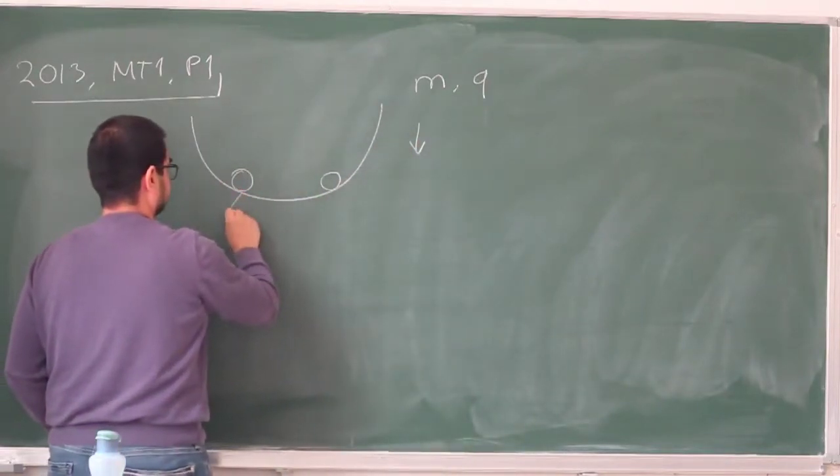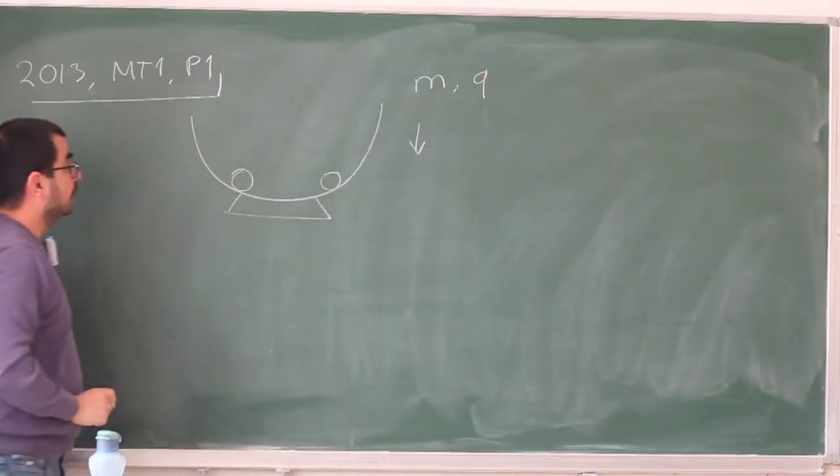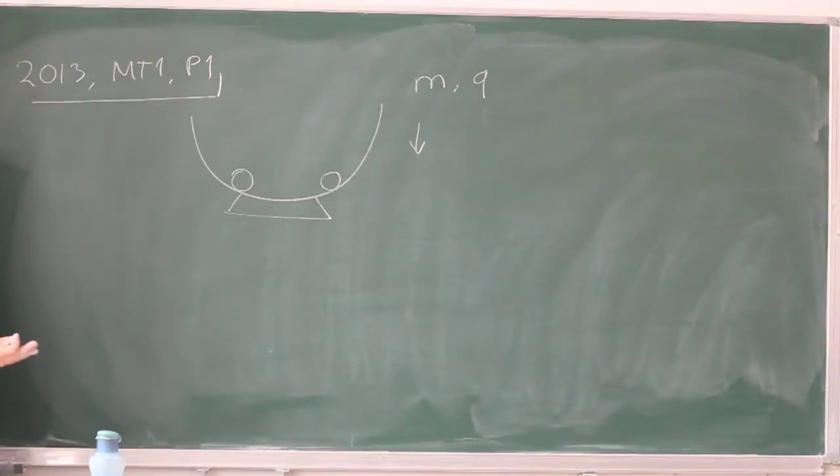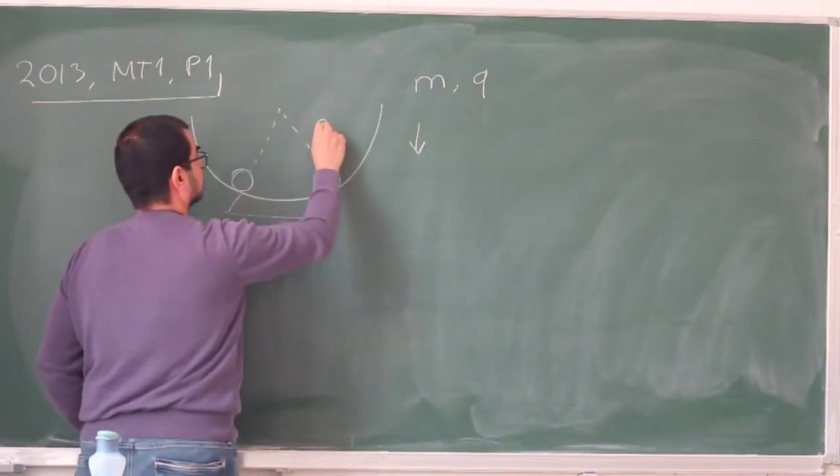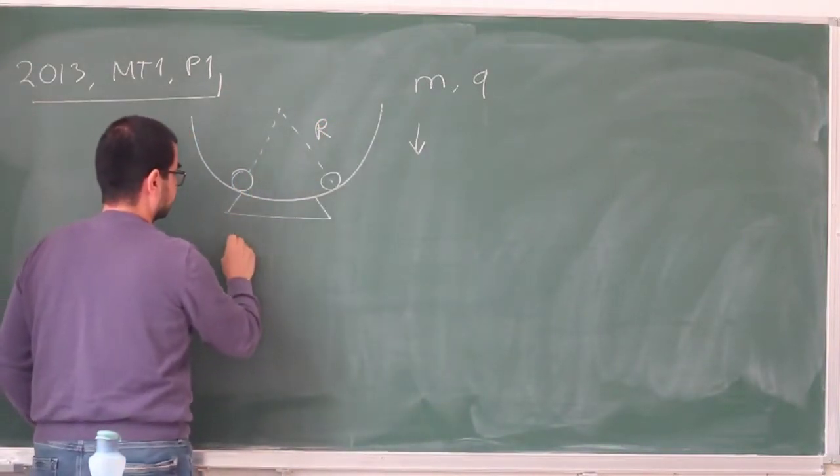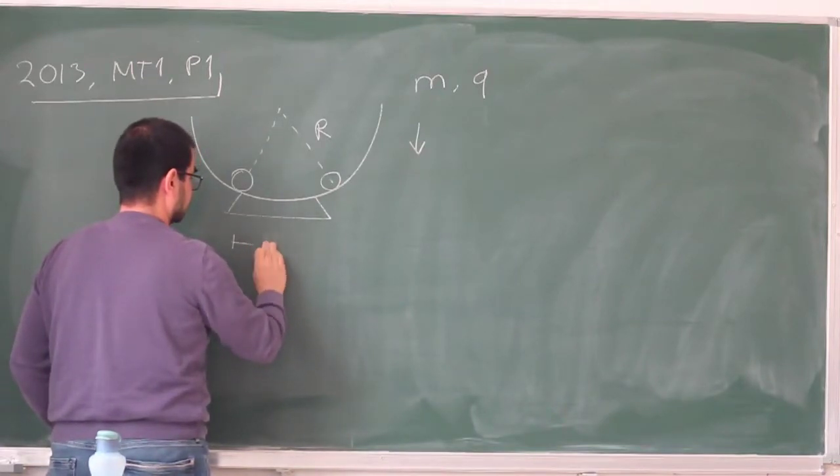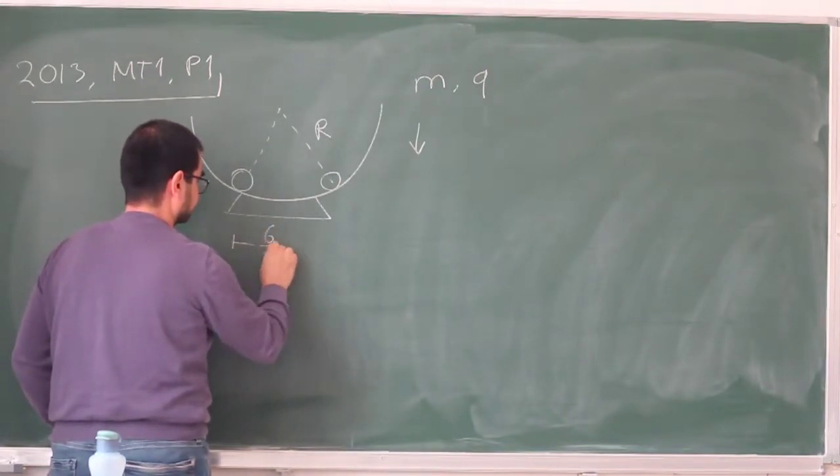This is something that just holds these, and they are equally charged so they repel each other and they come to equilibrium at some point. So the radius of this bowl is capital R, the distance between the charges is 6 fifths of R.